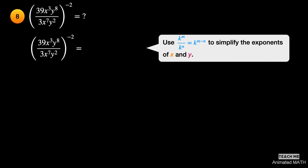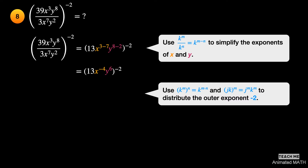First, simplify the terms inside the parentheses. 39 divided by 3 is 13. Use the sixth property for bases x and y. The exponent of x is 3 minus 7, or negative 4. The exponent of y is 8 minus 2, or 6. Use the seventh and eighth properties to distribute the exponent negative 2 to all terms inside the parenthesis. The new exponent of x is negative 4 times negative 2, or positive 8. The new exponent of y is 6 times negative 2, or negative 12.